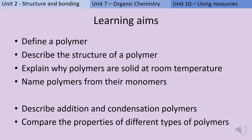This is all combined science content from Unit 2. In the latter part of the video we're going to look at some material from Unit 7 and Unit 10, which only applies to you if you're taking triple science. From Unit 7 we're going to look at addition and condensation polymers, and from Unit 10 we're going to look at the properties of different types of polymers.